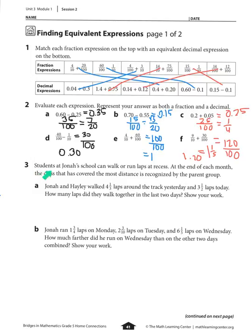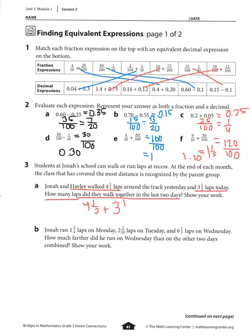Number 3: Students at Jonah's school can walk or run laps at recess. At the end of each month, the class that has covered the most distance is recognized by the parent group. Jonah and Haley walked 4 and 1 third laps yesterday and 3 and a half laps today. How many laps did they walk together in the last two days? We're going to add those up.